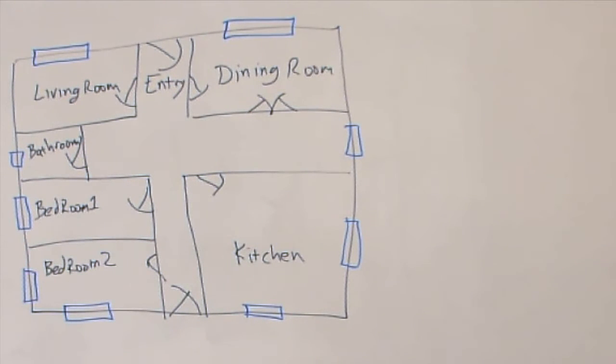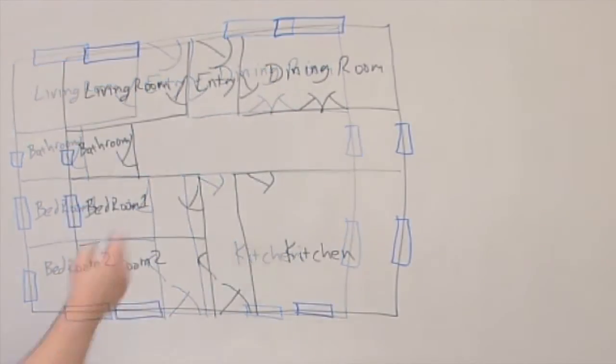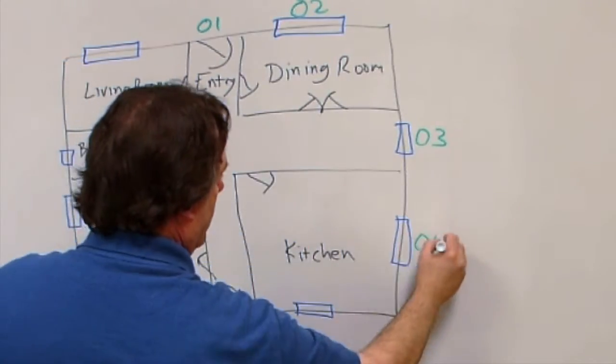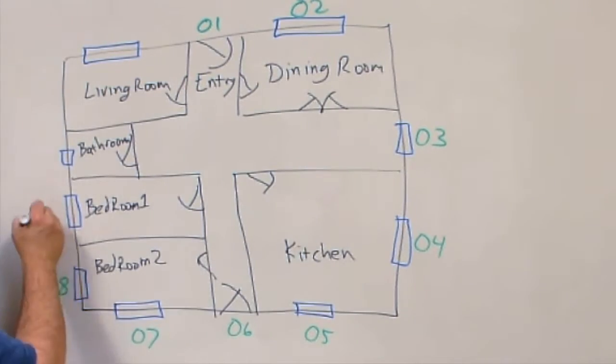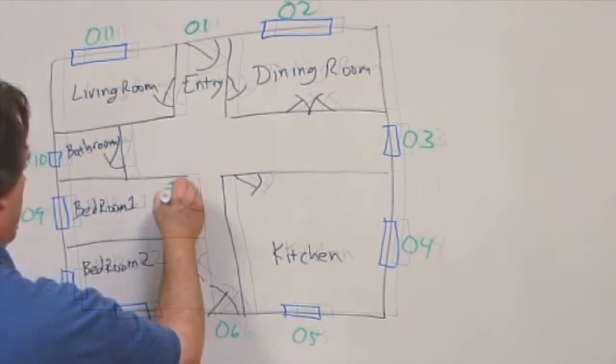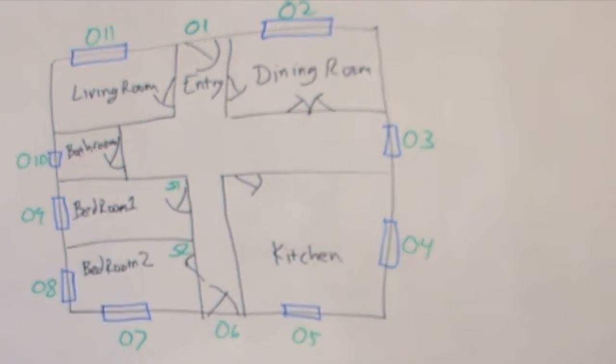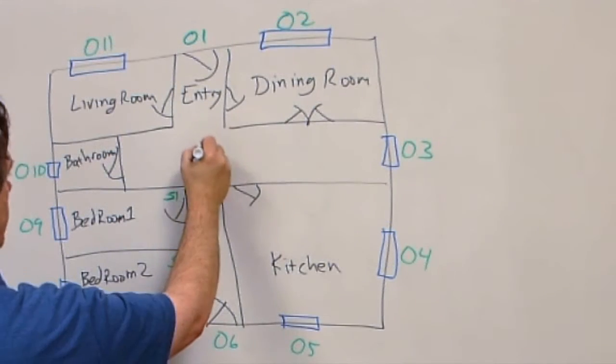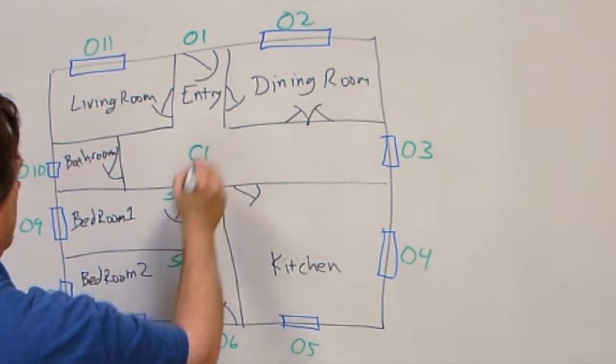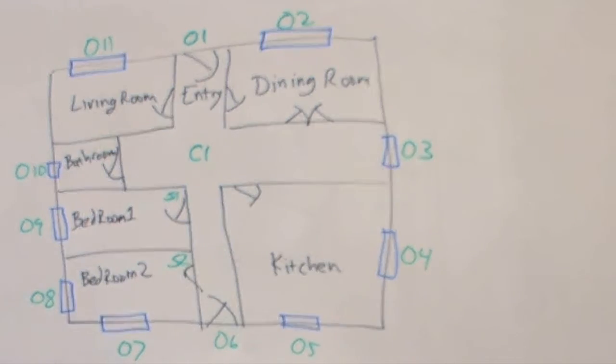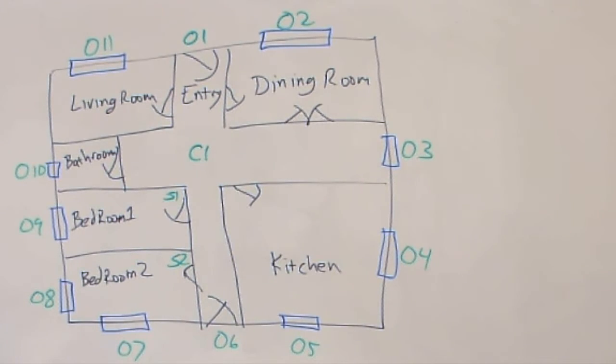We would put an open-close sensor on doors and windows. So we'll use O for the open-close sensor. And we might also decide that we need a smoke detector in each of the bedrooms. And we want a carbon monoxide sensor in the house. We'll put it in the central area and we'll call that C1.